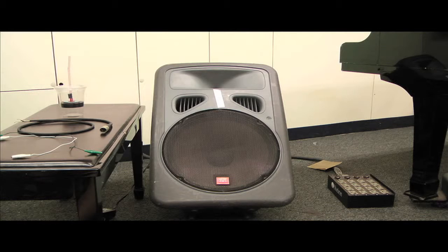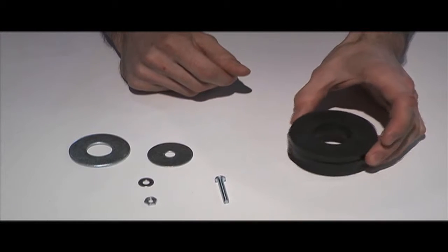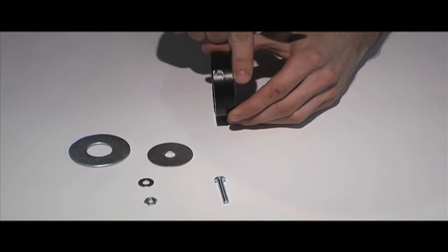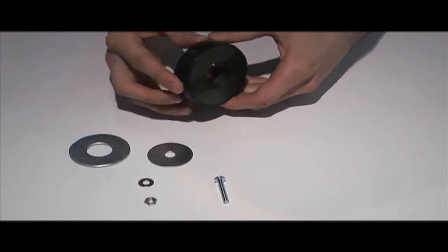So now that we have all our materials, let's start building the mic. The first thing we want to do is put our magnet together. Here you can see the two ceramic ring magnets taped together with electrical tape.